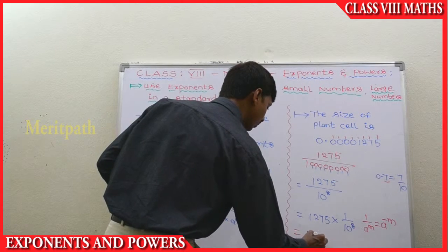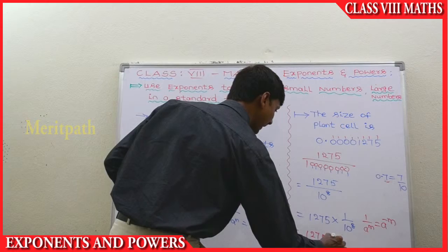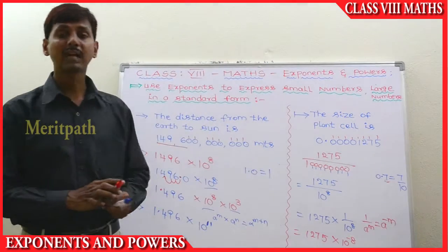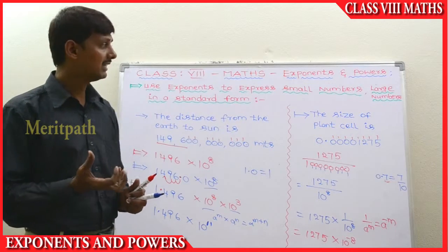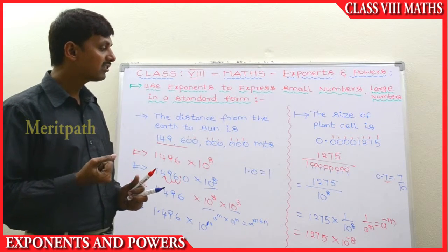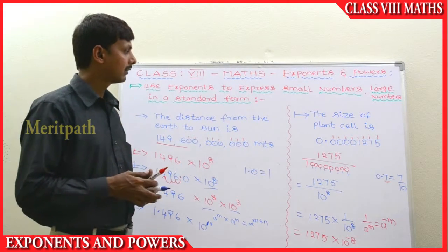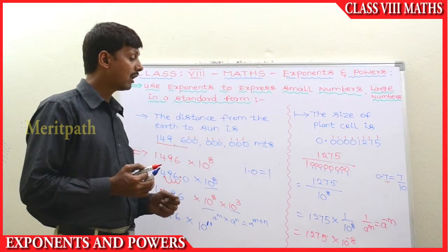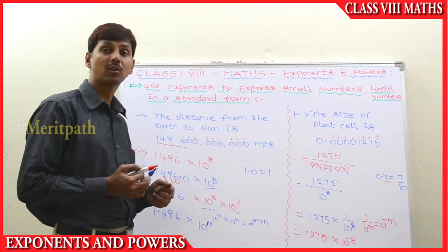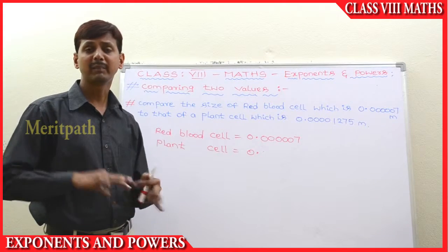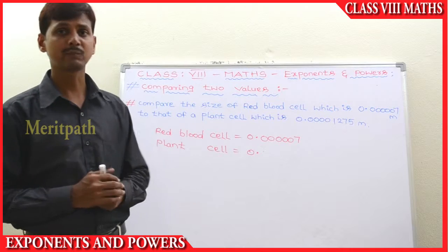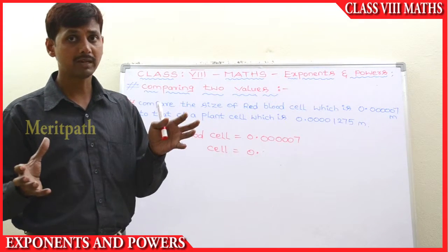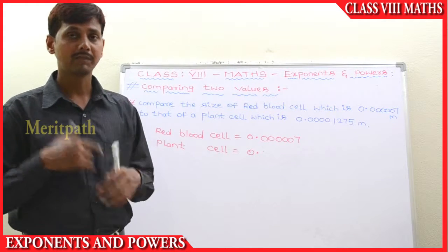So we get 1275 into 10 to the power of minus 8. We need to write this smallest number in a larger standard form. So this smallest number is represented as 1275 into 10 to the power of minus 8. Let's compare two values to see their laws of exponents — we will take the larger value and smaller value and compare them.